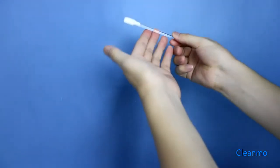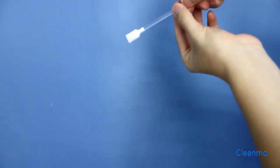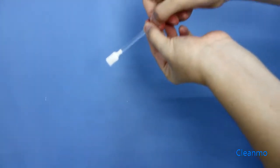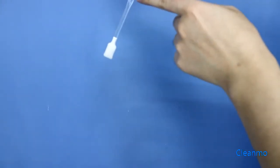In cleaning print heads, messy rags are a thing of the past. Introducing CleanMo Alcohol Snap Swabs. This self-saturating swab is filled with 99.9% electronic-grade isopropyl alcohol.